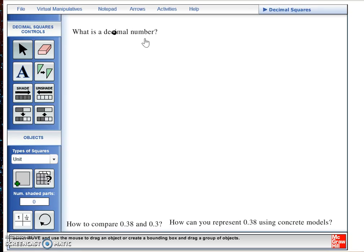What is a decimal number? A decimal number is a number that represents part of a whole. To further explain this, I will use decimal squares.